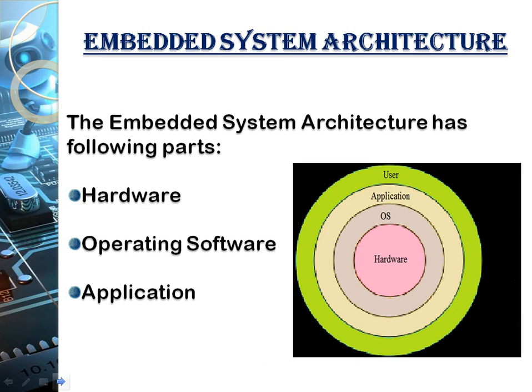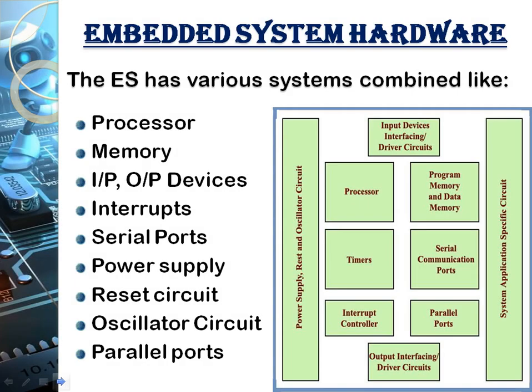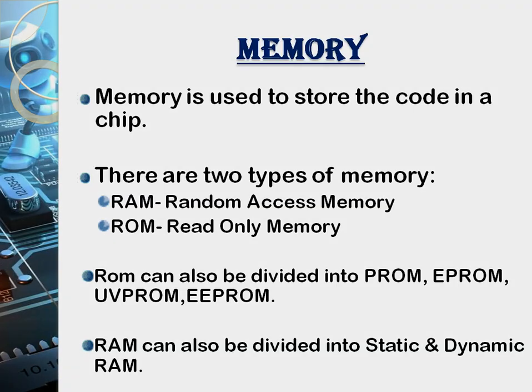Embedded system architecture consists of hardware, the software running on that hardware, and the application for which the hardware was made. An embedded system should have a processor or controller, memory, input and output devices, interrupts, serial ports, and other devices according to requirements.